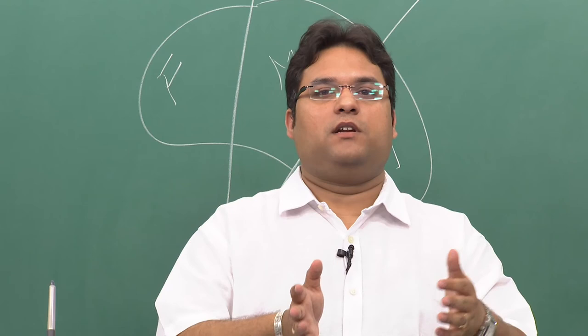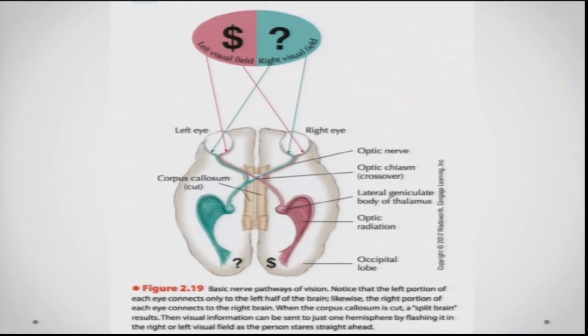This is a representation of that scenario: the dollar sign is presented in the left visual field, processed by the right hemisphere, and the question mark is presented in the right visual field, processed by the left hemisphere.